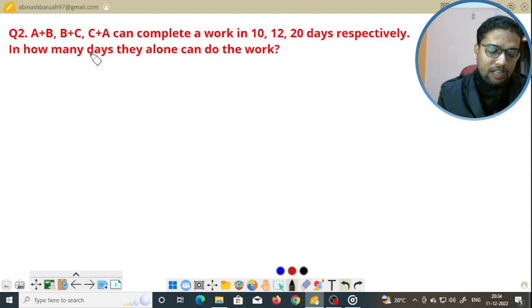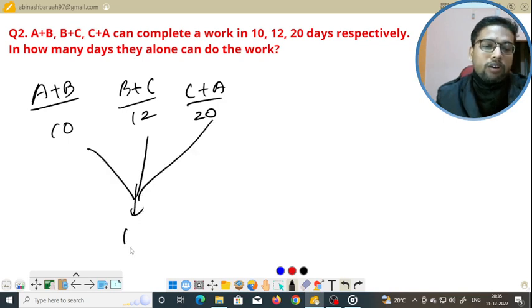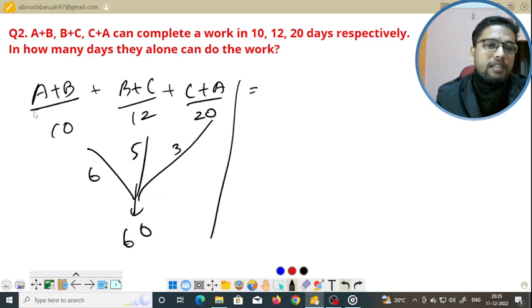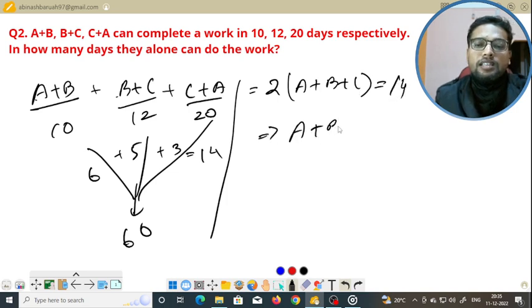The problem states: A plus B, B plus C is 12, and C plus A is 20. We need to find the individual values. A is equal to, we will match through the equation. Here we can do A plus B plus C. We will calculate A plus B plus C.